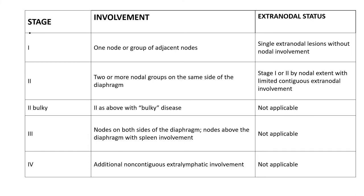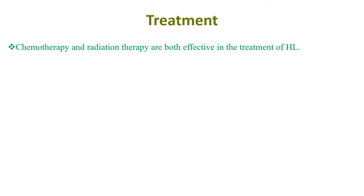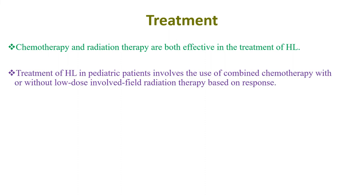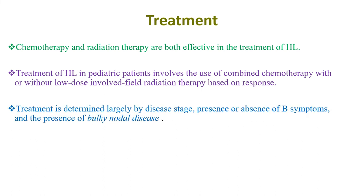There are different protocols of management for different stages of Hodgkin's lymphoma. Chemotherapy and radiation therapy are both effective in treatment. Management in pediatric patients involves the use of combined chemotherapy with or without low-dose involved-field radiation therapy based on response. Treatment is determined largely by disease stage, presence or absence of B symptoms, and the presence of bulky nodal disease.